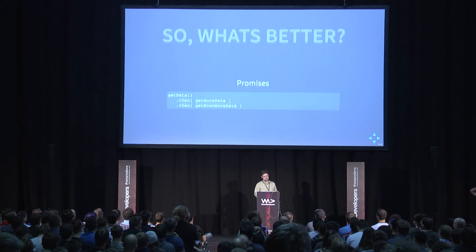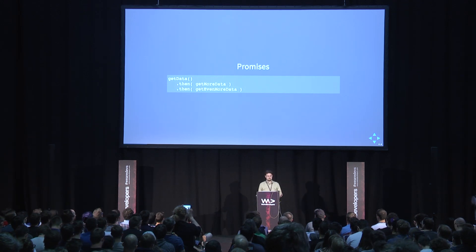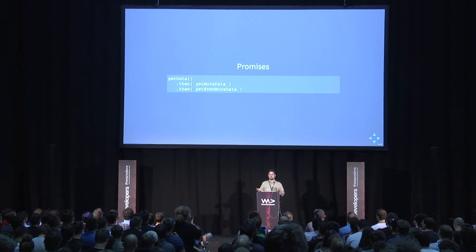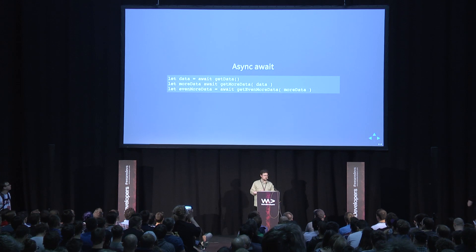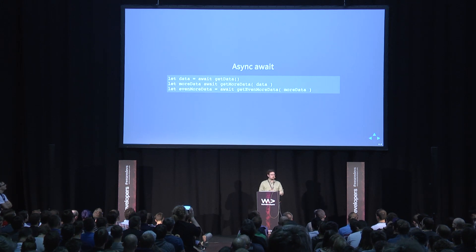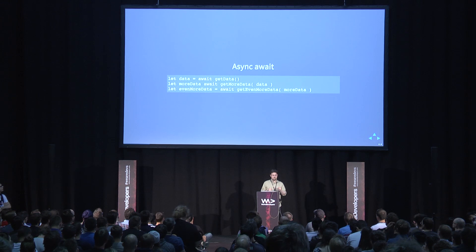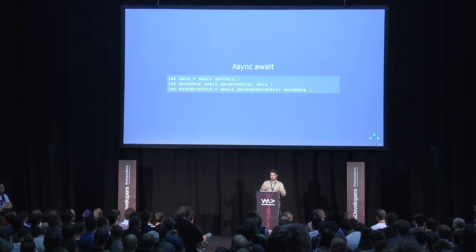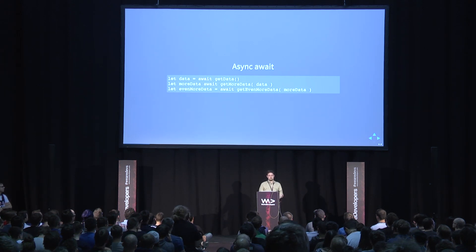Promises are better — this is a better way to structure your calls. You have a then method and you can place your calls accordingly because you have a dependency between calls. As of recently, Node has async/await and most of us use Babel to utilize async/await in the ES7 standard, giving us synchronous-looking code. But I'm not here to say async/await is enough.